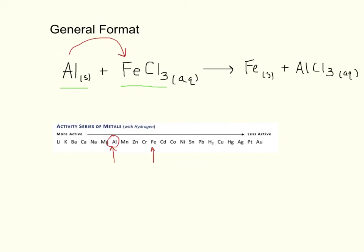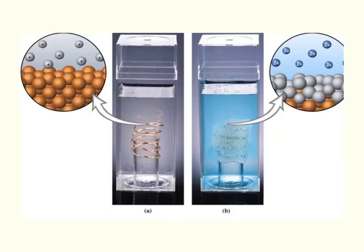So if you want to think about this on the nanoscale, let's look at an example that we've done in class. And this is an example where we have copper metal in a solution of silver nitrate. So that's AgNO3, which is aqueous.